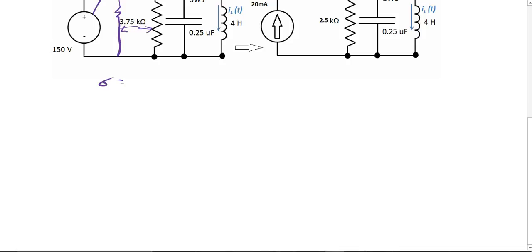Alpha equals to 1 over 2RC. You have 1, 2 times your R is 2.5 times 10 raised to 3 times C is 0.25 times 10 raised to negative 6. This gives you, after you put it in the calculator, gives you 800.